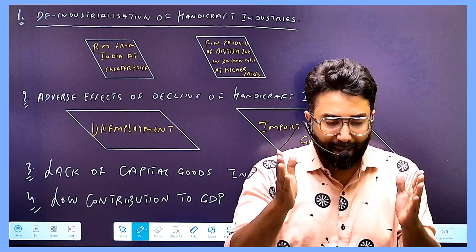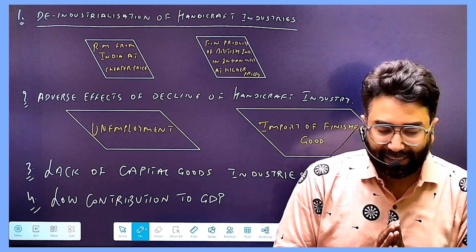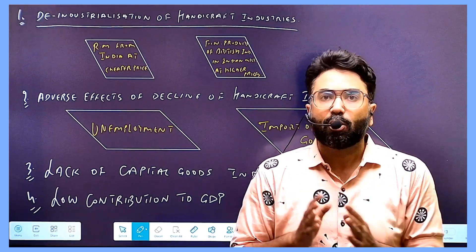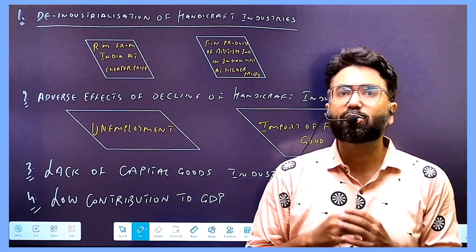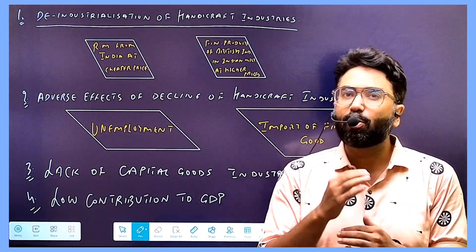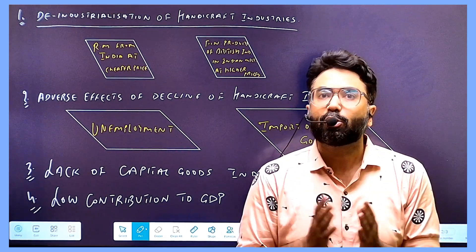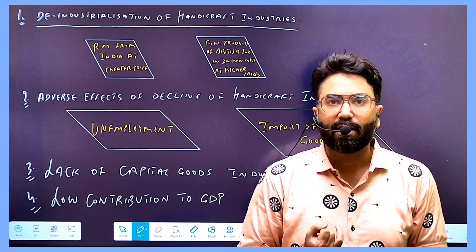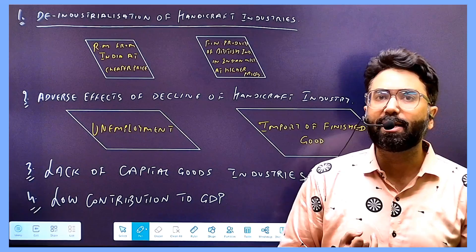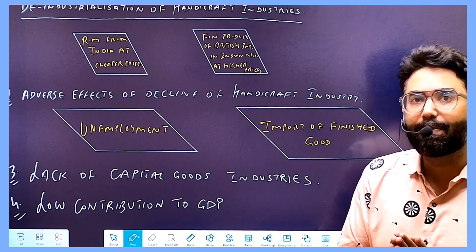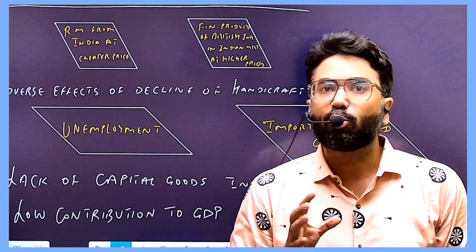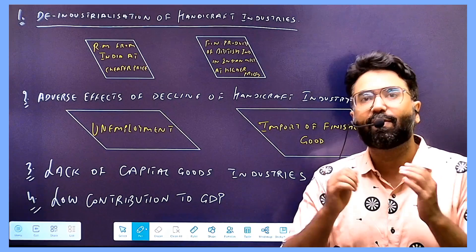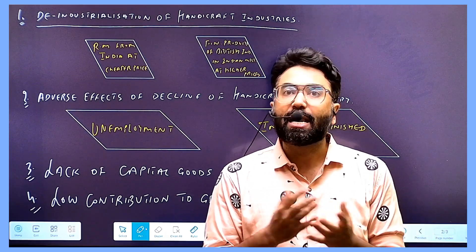The adverse effects of the decline of handicraft industries - when they destroyed our handicraft industries, what happened to the economy? The first thing is that our primary sector, where most of the population, 70-75% of the population, was dependent on agriculture and handicraft industries. When handicraft industries declined, unemployment grew up.